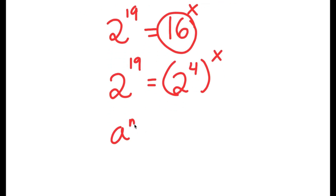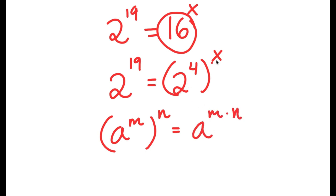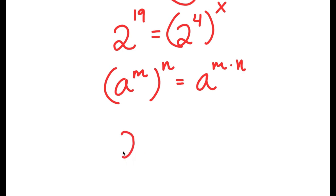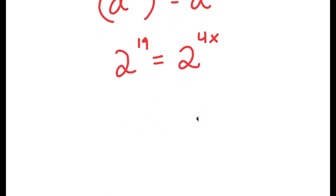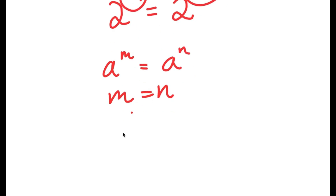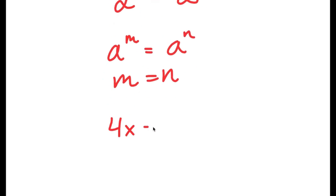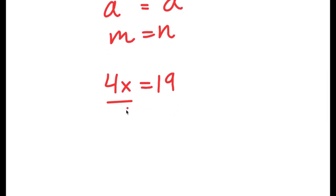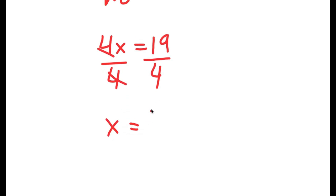If I have something in the form a to the power of m to the power of n, this is equal to a to the power of m times n. So 2 to the power of 4 to the power of x equals 2 to the power of 4x. Now, if I have a to the power of m equal to a to the power of n, this means m equals n. So in this case, 19 is equal to 4x. Dividing both sides by 4, I get x is equal to 19 over 4.